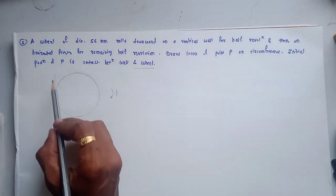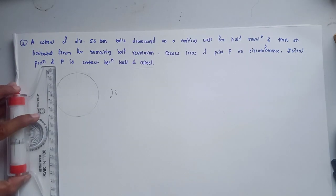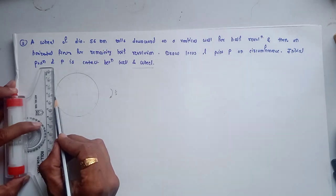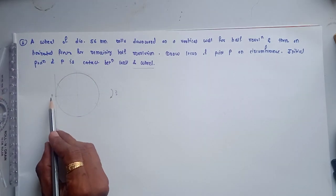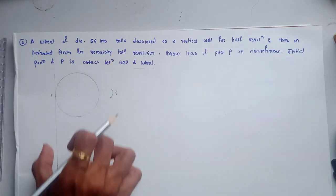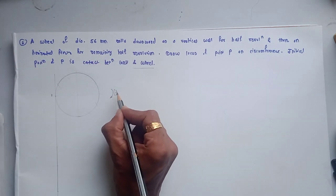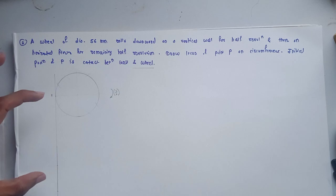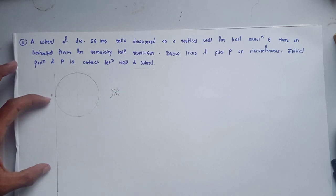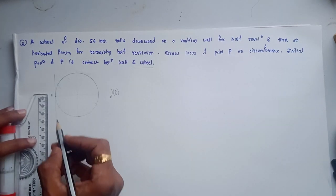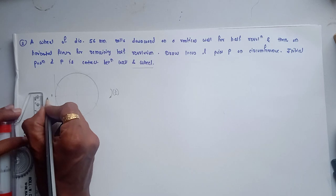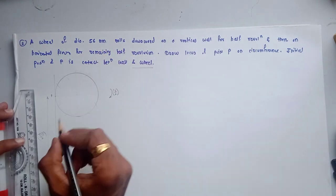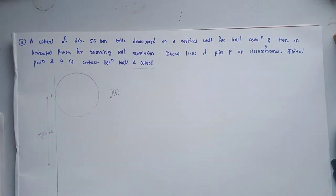First step: draw one vertical line representing the wall. Then draw the wheel, which is a circle of diameter 56 mm. The contact point is the starting point for the curve — name this point P. The circle rolls downward on the vertical surface for half revolution. The distance covered by the center is half the circumference, which is pi*d/2. With diameter 56 mm, this equals approximately 88 mm.